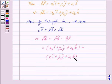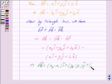This implies vector PQ equals (x2 minus x1)i cap plus (y2 minus y1)j cap plus (z2 minus z1)k cap.